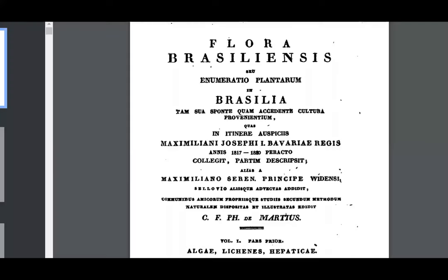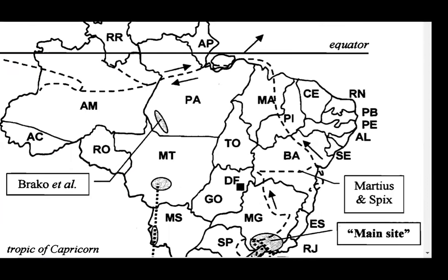This was the first lichen flora of Brazil — it's really old. It was made by Martius, who did the collection and made the whole Flora Brasiliensis. Note that he calls it 'flora' too — it's in Latin — but the lichens were done by Eschweiler. Interestingly, the dotted line here shows where Martius and Spix went, and they really went all over the north and northeast of Brazil, unlike most of the other lichen collectors after them, who went to much fewer places.